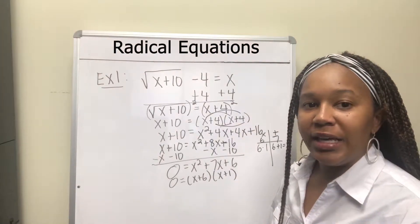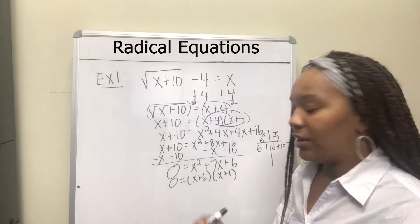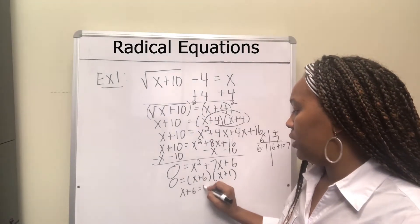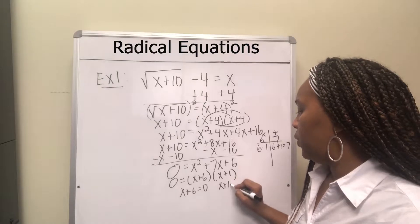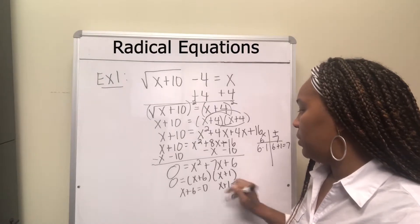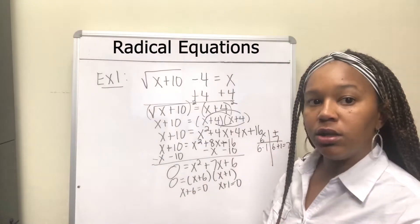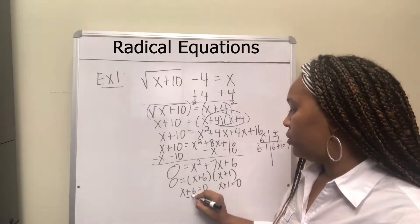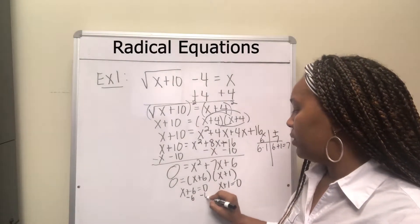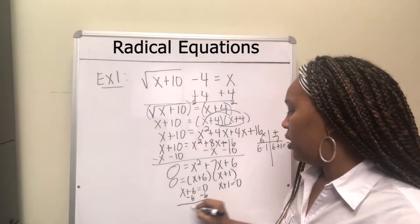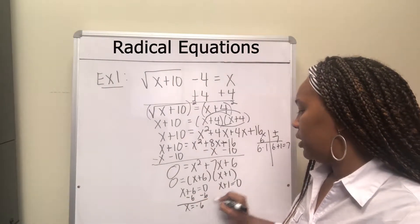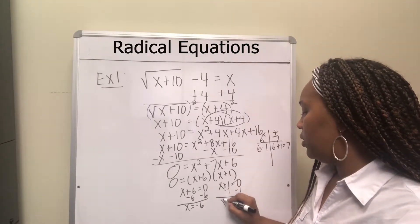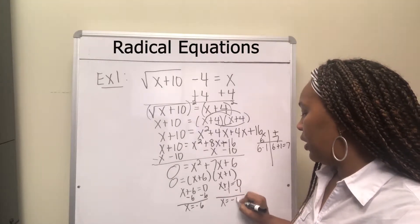Taking each factor and setting them equal to 0 using the zero product property: x plus 6 equals 0 gives x equals negative 6, and x plus 1 equals 0 gives x equals negative 1.